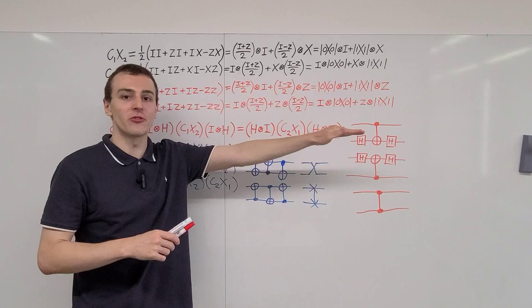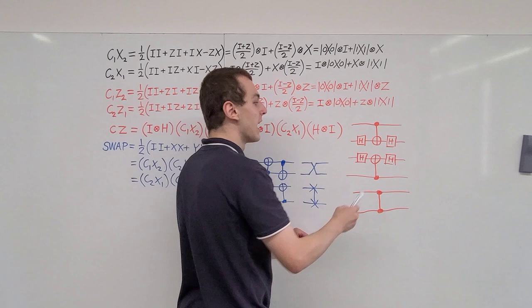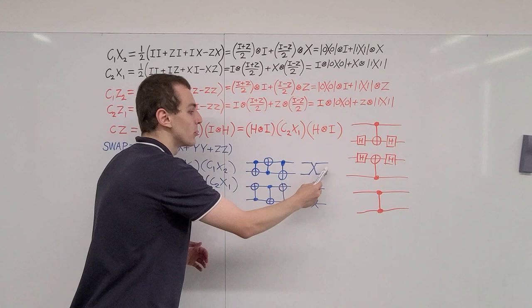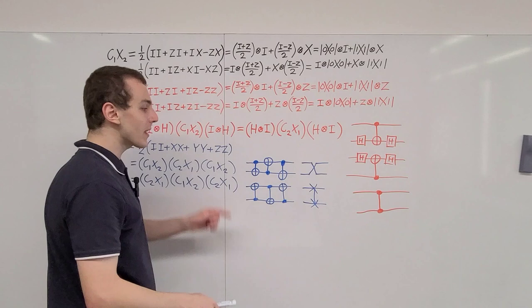We've seen Pauli matrix tensor product linear combinations for these gates, including the identity operator with the Pauli matrices — four 2×2 matrices — whose tensor products give a basis of 4×4 matrices. We treat them as orthonormal basis vectors with an inner product defined using the trace, and that allows us to create these representations. We've also seen the Dirac notation form and looked at the associated circuit identities.